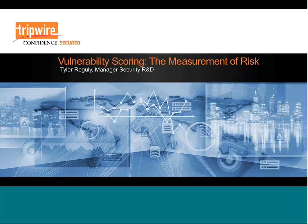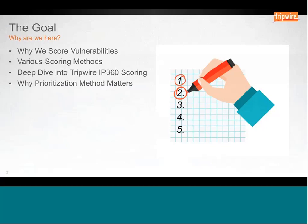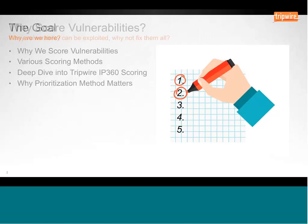Thanks, Ed. Hi everybody. As Ed mentioned, we're going to talk about vulnerability scoring today — the measurement of risk and some of the different ways that we can do that. We're going to talk about why we score vulnerabilities, look at the five most common scoring methods plus one extra, dive into IP360 scoring, and then talk about why prioritization methods really matter and what we're going to get out of those.